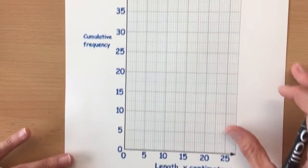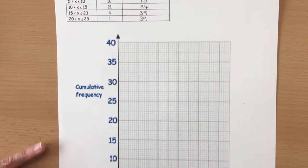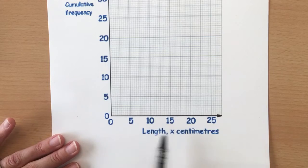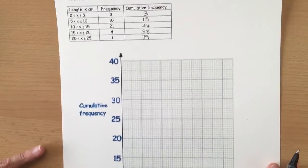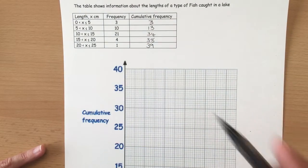Now the cumulative frequency graph looks like this, so we have cumulative frequency up the side and the question was about the lengths of fish so the length is across the bottom. Now it's continuous data, this is why it's grouped, and the way that we plot it is...